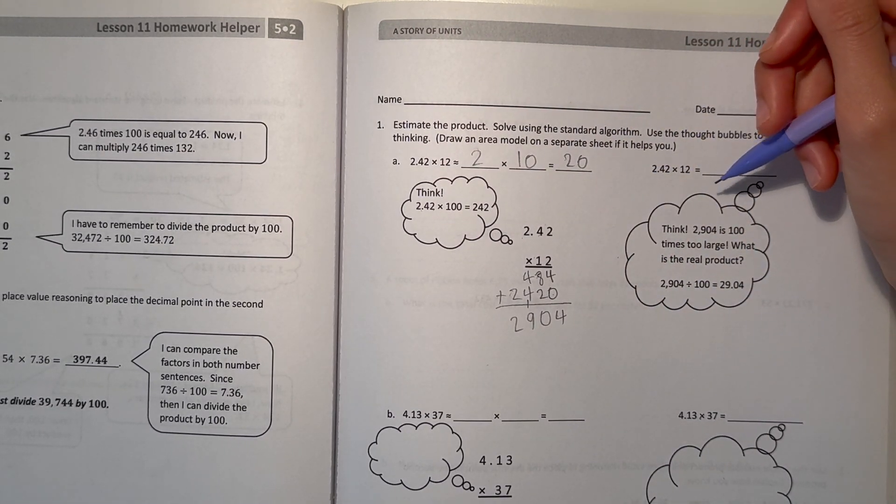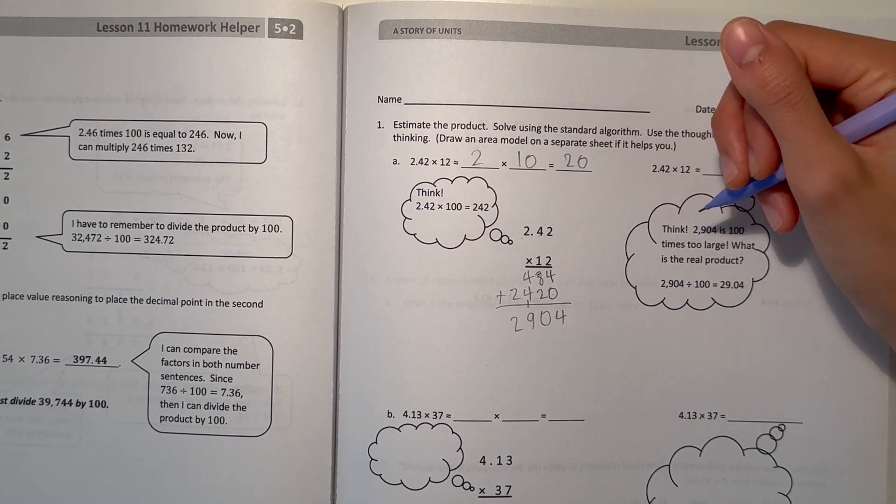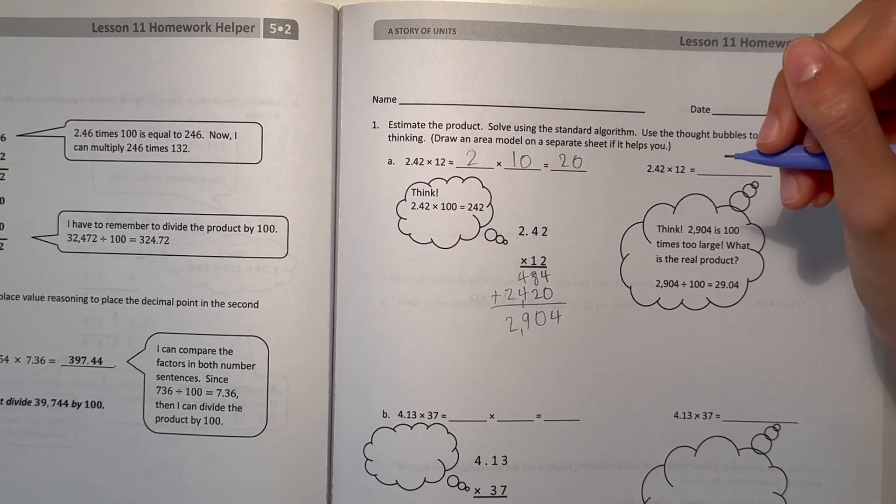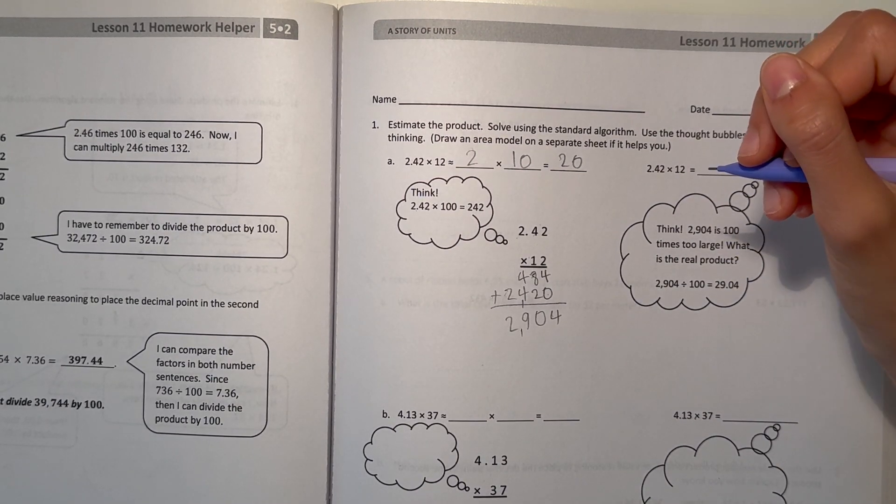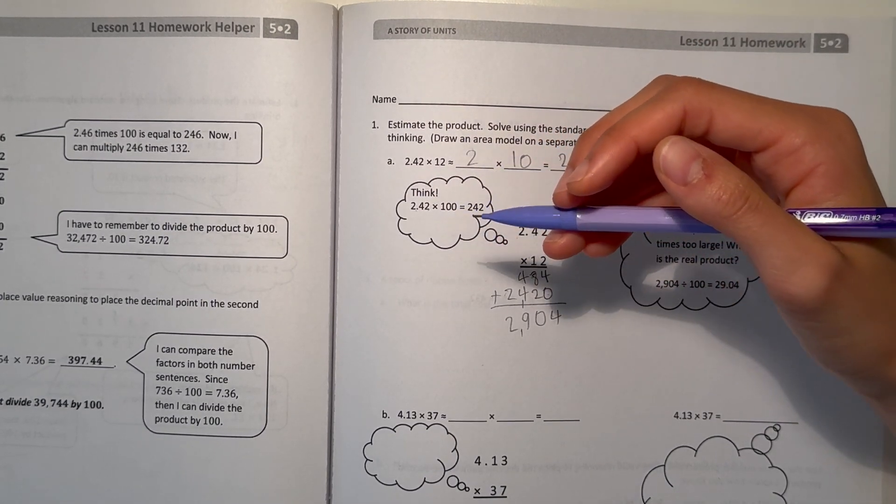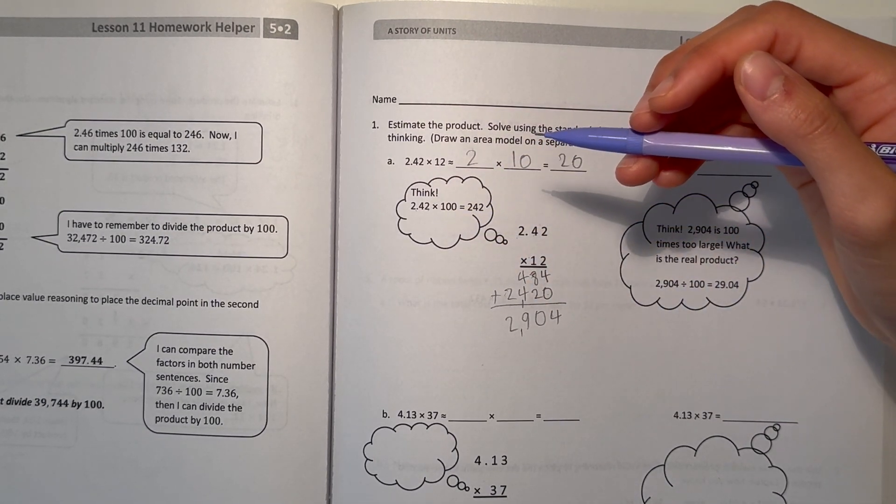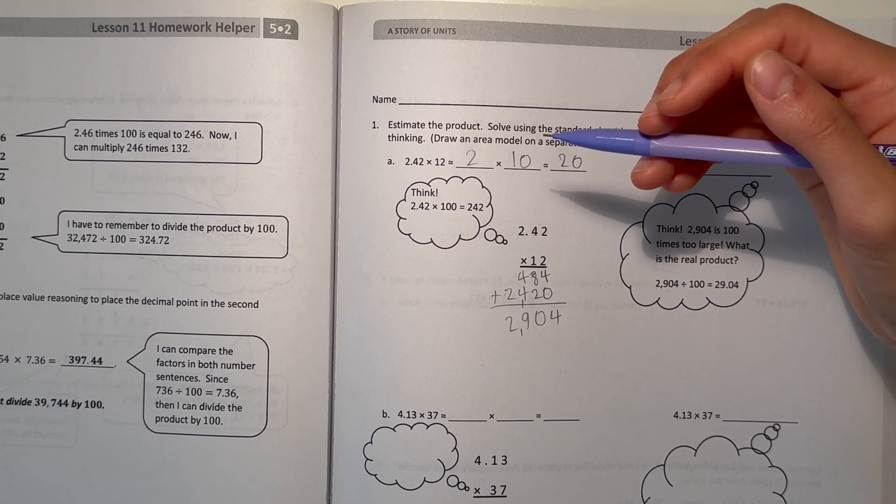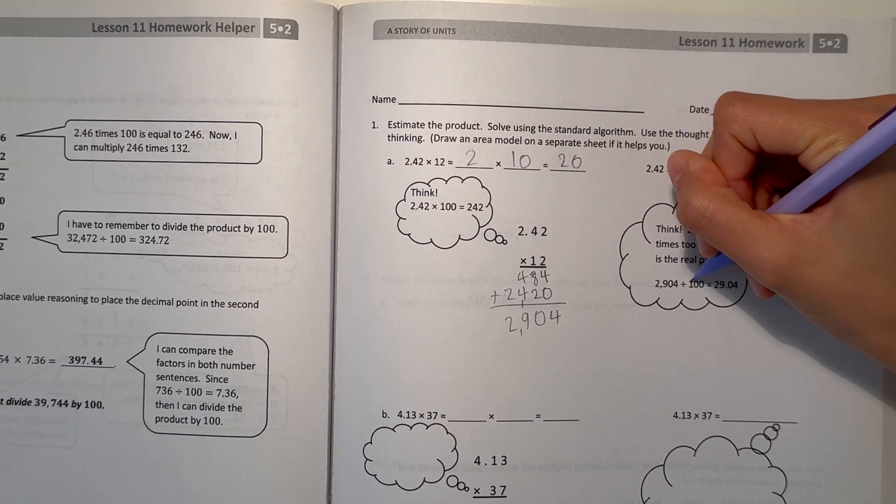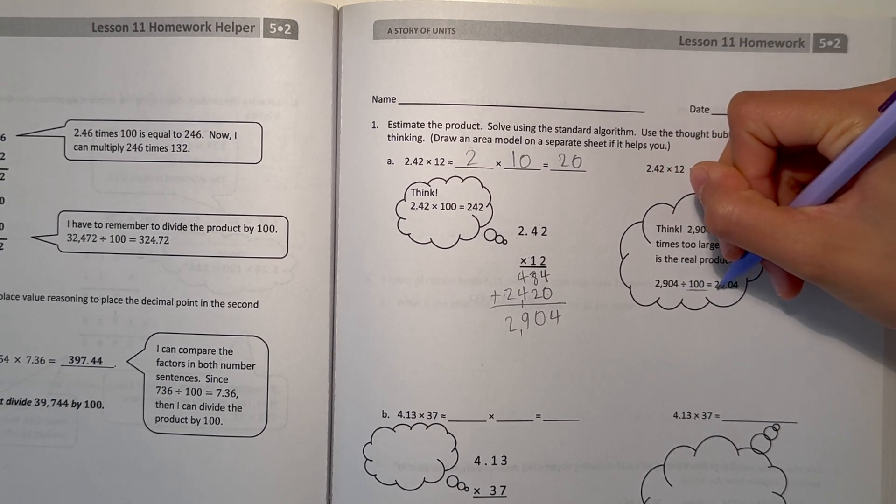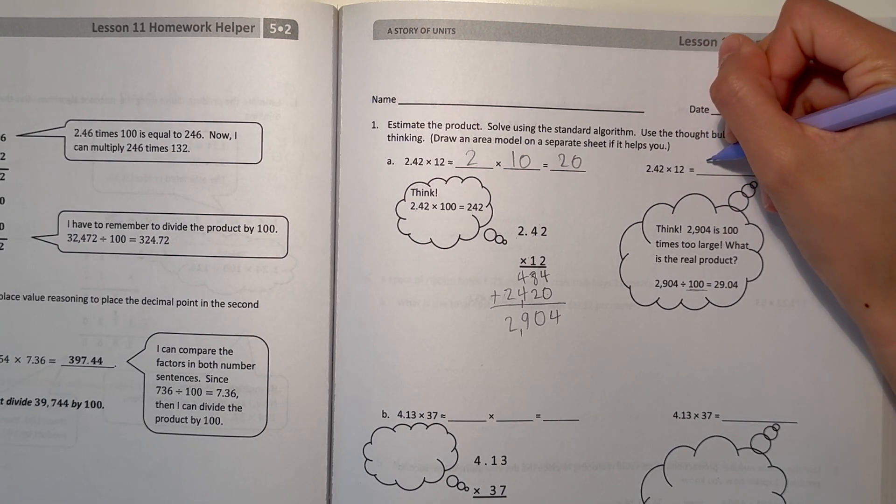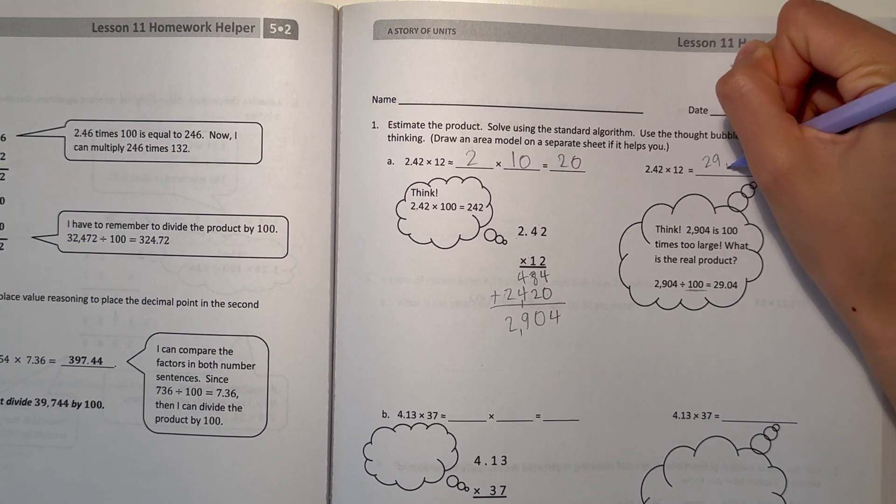Now it's telling us to think 2,904 is 100 times too large. So what is the real product? Since we multiplied 2.42 by 100, to get the real product we can divide by 100 now to find our answer. That's how they got 29.04. 2.42 times 12 is 29.04.